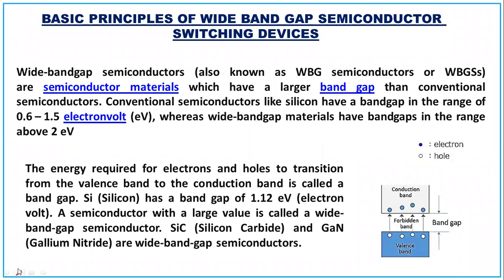Wide band gap semiconductor devices, also known as WBG semiconductors, are semiconductor materials which have a large band gap. The band gap — that is, the forbidden band between the valence band and the conduction band — will be larger, that is why we call them wide band gap. Conventional semiconductors like silicon have a band gap in the range of 0.6 to 1.5 electron volt.